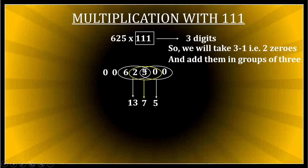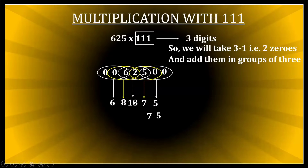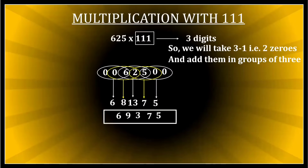Taking the fourth set: two, six, zero — two and six is eight, plus zero is eight. So I get 8 for the fourth digit. The last set: six, zero, zero — which gives 6. My results are: 5, 7, 13, 8, 6. From 13 I take 3 here and carry 1 forward — eight plus one is nine. So the final answer for 625 multiplied by 111 is 69,375.